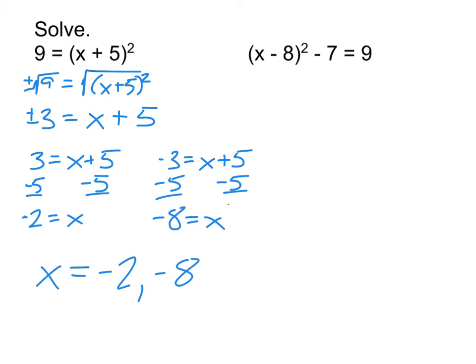One side note: when writing the two solutions with a comma between them, there are no parentheses around them. We don't want parentheses because these are both x values — if you put parentheses around them, you're saying it's an ordered pair, implying x and y. But they're both x values, so definitely no parentheses.